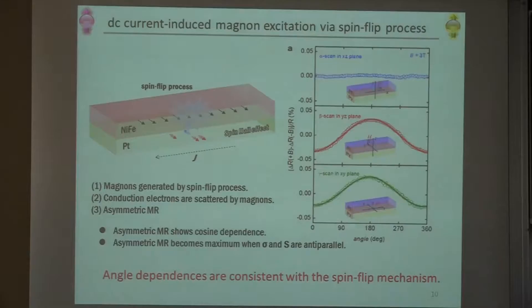If so, the numbers of created magnons shows cosine dependence between the injected spin and its angle between this magnetization and the injected spin. And also, when the injected spin is anti-parallel to this magnetization, we get a creation of magnons. So resistance is larger when the magnetization is anti-parallel to the injected spin. Here, I show the angle dependence of this MR. And this angle dependence is consistent with this simple model.